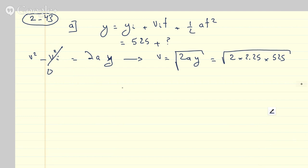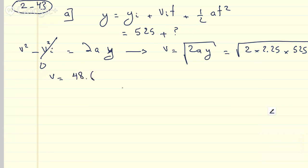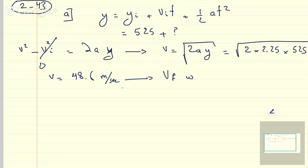We need a calculator. So 2 times 2.25 times 525, square root of that. So this is 48.6 meters per second. So this becomes your v-final when engines stop working.